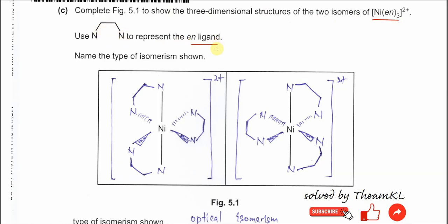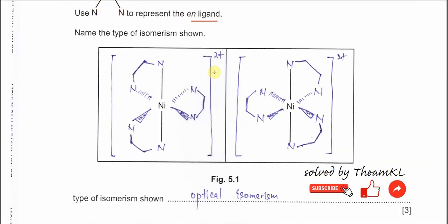You need to draw the nickel with the 3 EN complex ion. Left hand side if you draw in this way, right hand side must follow. They are mirror images. You should start from this 3D drawing. Draw the wedge lines and the dotted line to show that this is in front and this is at the back. Then you put this EN.